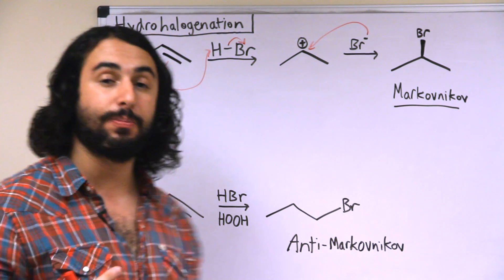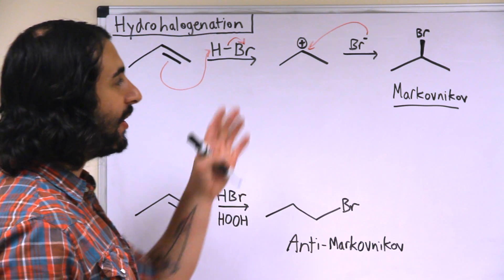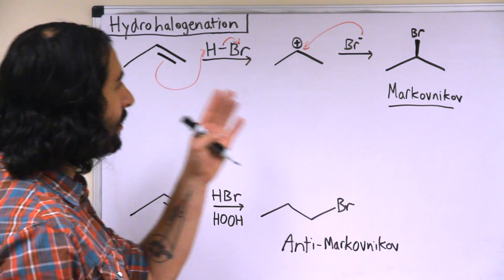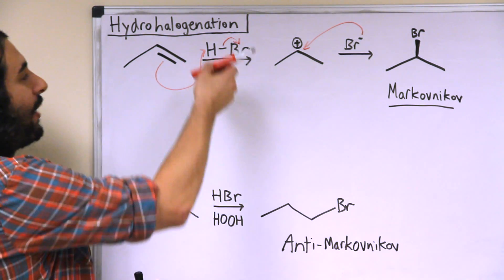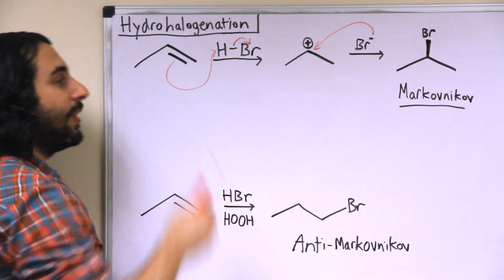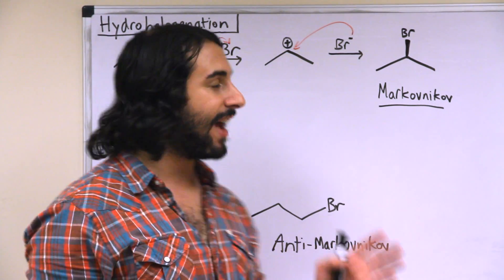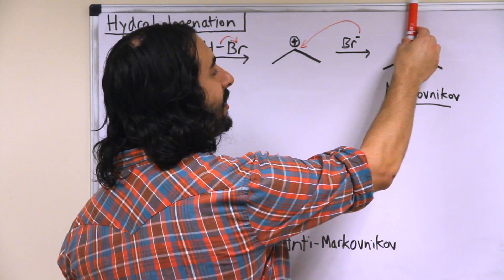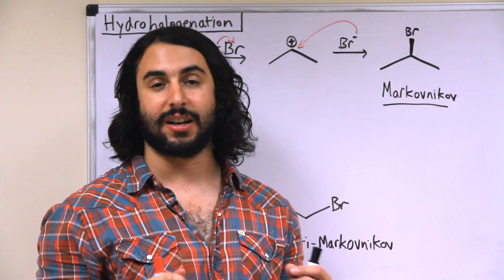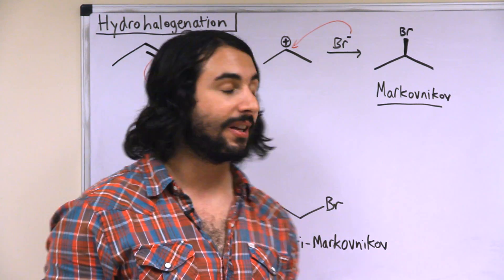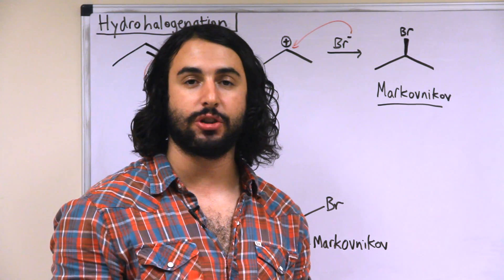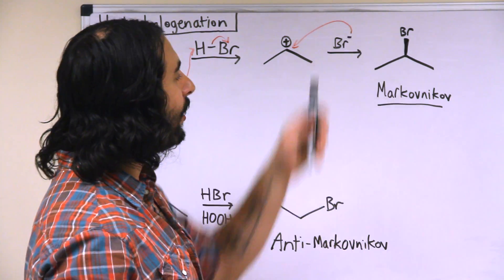Whereas there is no stereospecificity, there is something called regiospecificity. These are the two carbons participating in that pi bond and so any nucleophile that's going to attach, like a bromine, could either end up on the less substituted carbon or it could end up on the more substituted carbon. In the case where that nucleophile ends up on the more substituted carbon, you have what's called a Markovnikov product. This is a Markovnikov hydrohalogenation reaction because that halogen atom ends up on the more substituted of the two carbons.